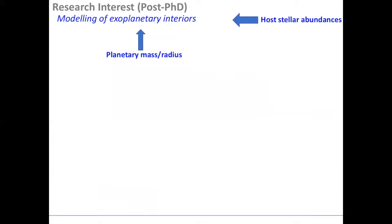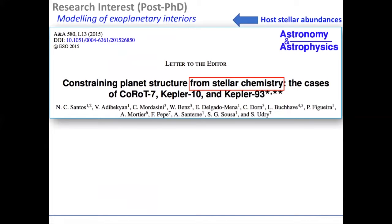For modeling exoplanetary interior structures, we need two principal constraints at least: the planetary mass and radius, and the host stellar abundances. In this talk, I'm focused on discussing the host stellar abundances, because this has been overwhelmingly and popularly used in previous and current studies.